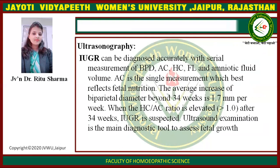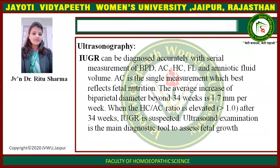Ultrasonography: IUGR can be diagnosed accurately with serial measurement of BPD, AC, HC, FL, and amniotic fluid volume. AC is the single measurement which best reflects fetal nutrition. The average increase of biparietal diameter beyond 34 weeks is 1.7 mm per week. When the HC by AC ratio is elevated more than 1.0 after 34 weeks, IUGR is suspected. Ultrasonography is the main diagnostic tool to assess fetal growth.